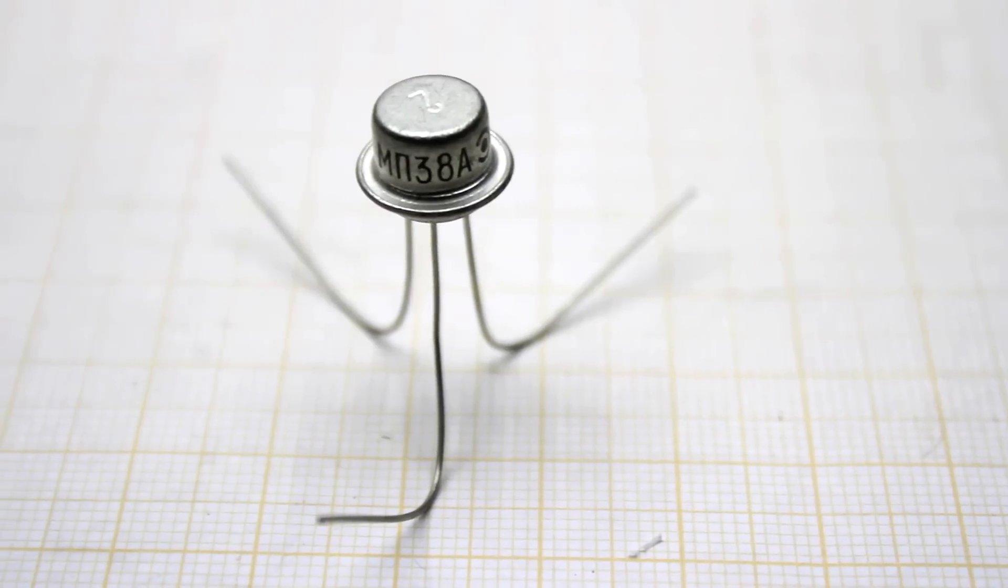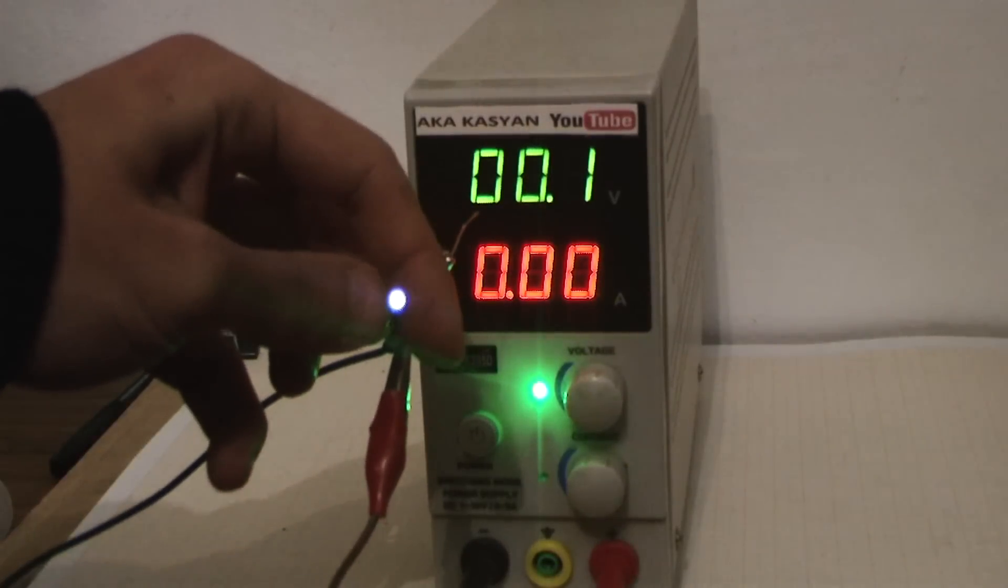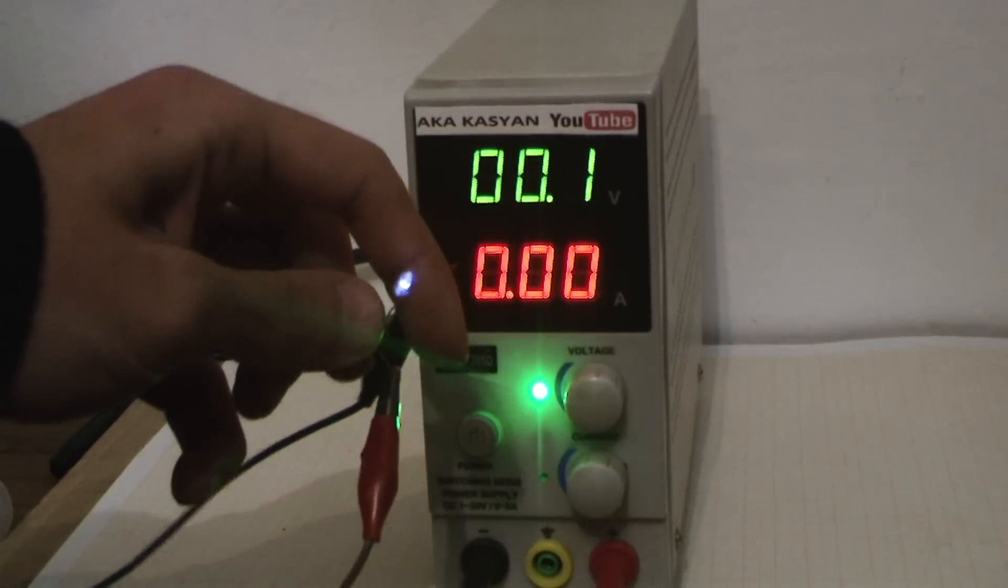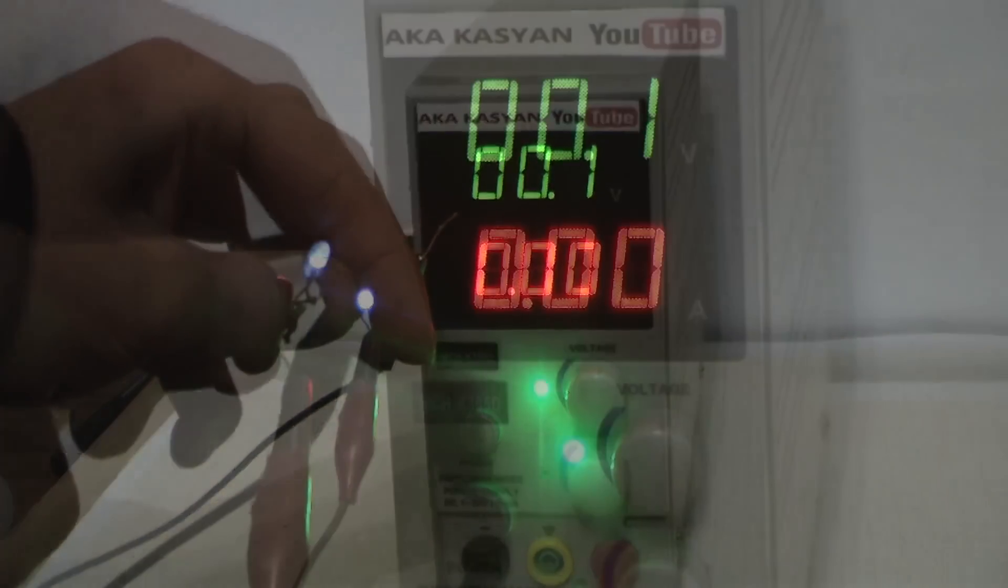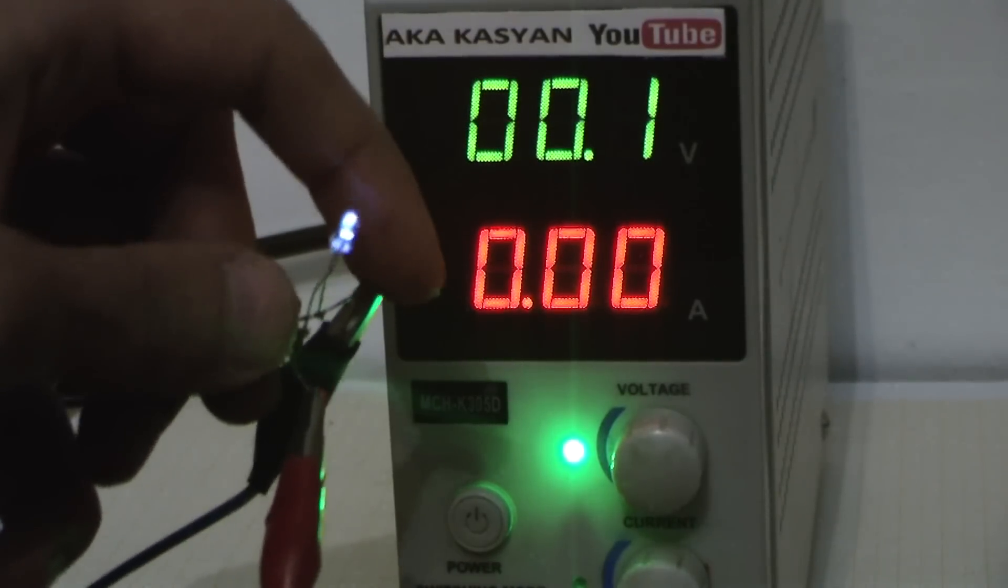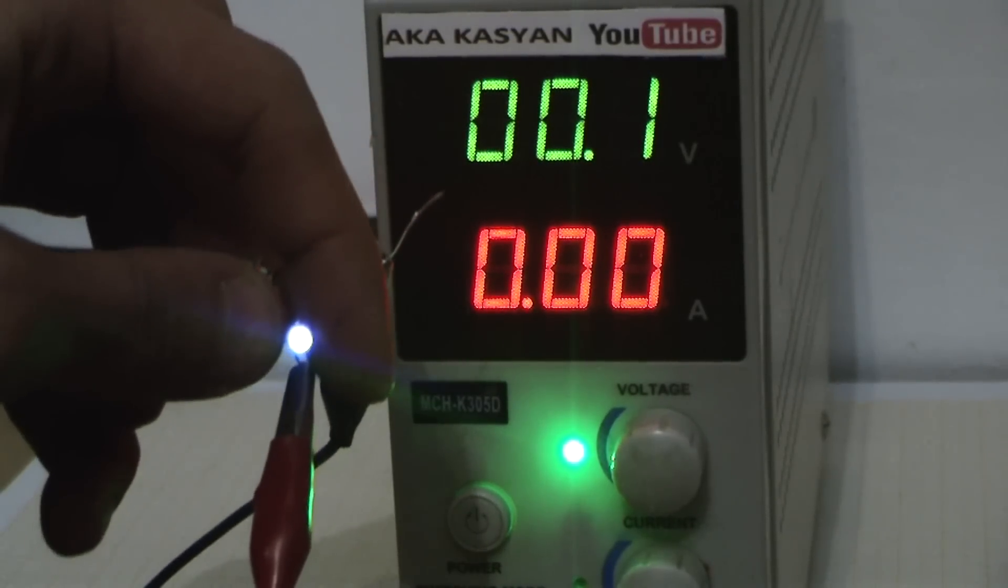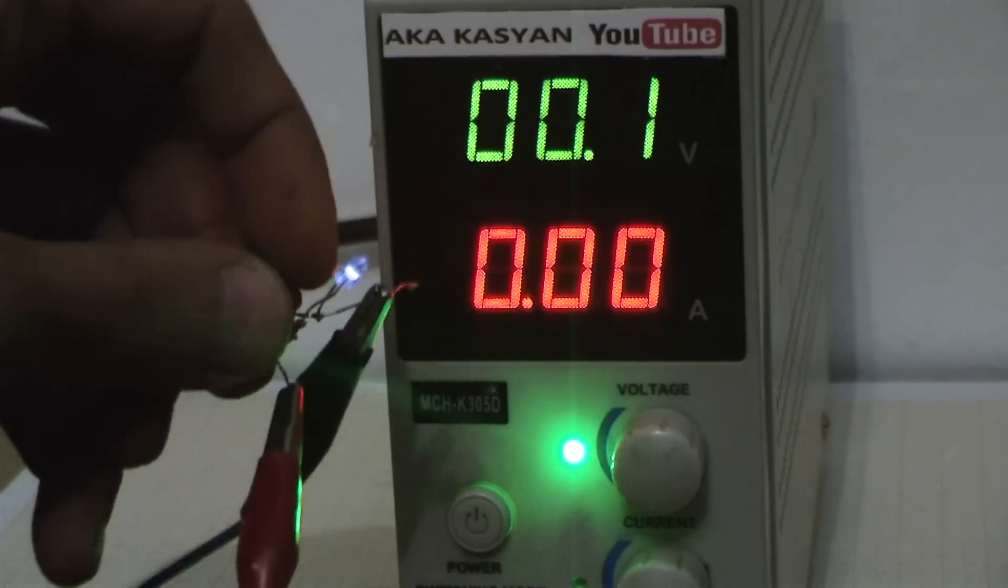Thanks to a germanium transistor, our converter starts from a voltage of only 0.25 volts and continues to work even if the supply voltage drops to 0.17 volts. In other words, the flashlight was shaken a couple of times and the LED already lights up.